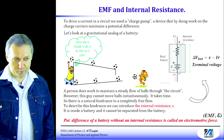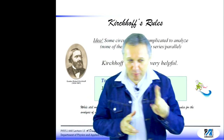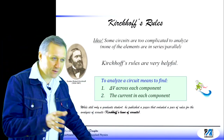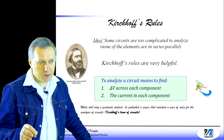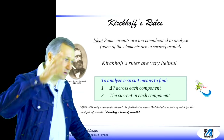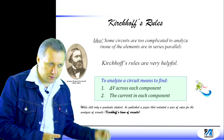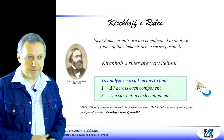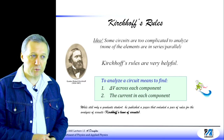When we introduced the method of equivalent resistance, we saw it can only be used when resistors are connected either in series or in parallel. But of course there are many situations where resistors are not connected that way. When the equivalent resistance method cannot be used, Kirchhoff rules can be applied — there are no limitations on the situations where Kirchhoff rules can be used.